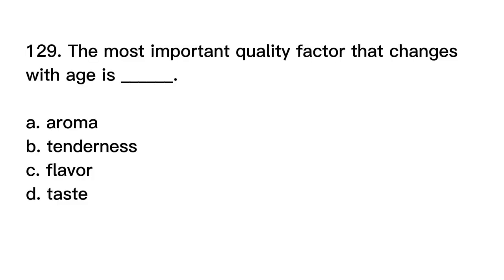Number 129. The most important quality factor that changes with age is blank. A. Aroma. B. Tenderness. C. Flavor. D. Taste. Correct answer is letter B. Tenderness.